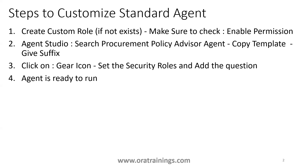Once that is done, go to Agent Studio and search for the 'Procurement Policy Advisor' agent. In today's session I'm copying this particular template. If you want to perform a similar operation on any other agent it should work too, but if you don't have a specific agent in mind, just use this one. Perform a copy template and give a suffix — generally you can give a short name of your organization or your own name.